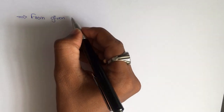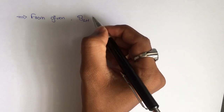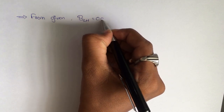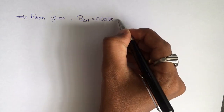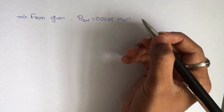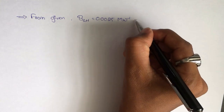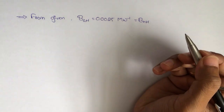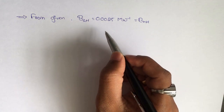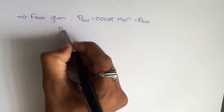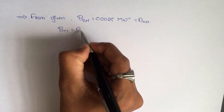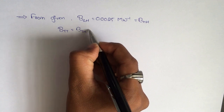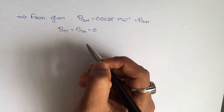From the given data, B_GH is equal to 0.0025 megawatt inverse. Since they haven't mentioned B_TT and B_TH, we are going to consider B_TT and B_TH both equal to zero in this problem.